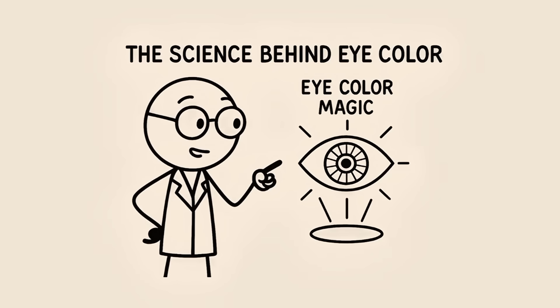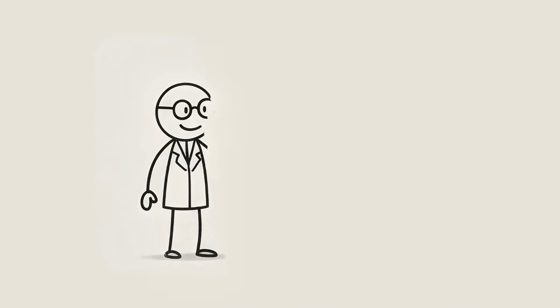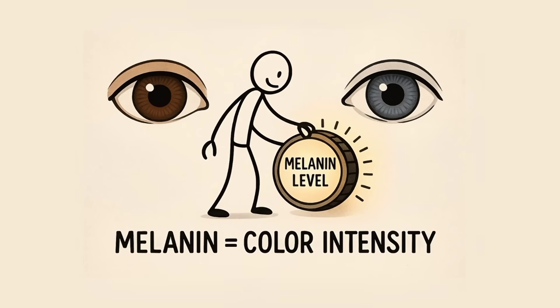Bonus section. The science of eye color. Okay, but how does all this magic actually work? It's all thanks to melanin. The pigment that decides how light or dark your eyes, skin, and hair are. Eye color depends on two main genes. O.C.A.2 and H.E.R.C.2. They act like volume knobs. Turn up melanin, you get brown. Turn it down, you get blue or gray.